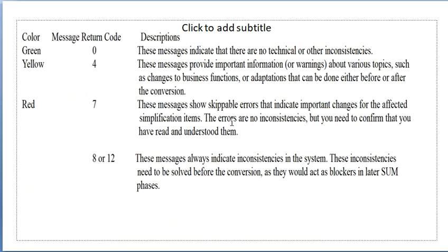The results give four kinds of return codes. The first color is green, with return code zero. It means the simplification item has no technical or other inconsistencies.